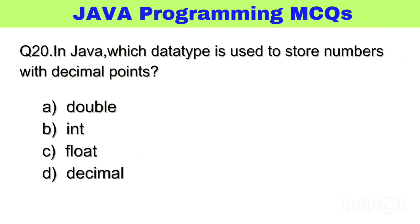Question number 20. In Java, which data type is used to store numbers with decimal points? The right answer, option A: double.